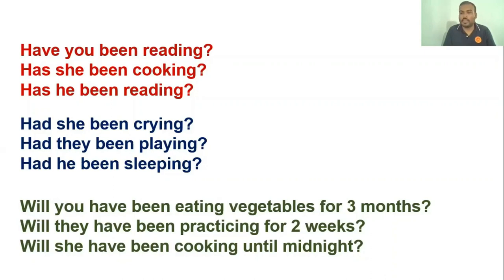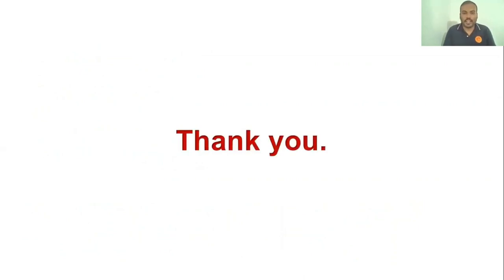To summarize: Present perfect continuous tense describes actions that have started earlier and have already stopped recently or are still continuing. Past perfect continuous tense describes actions that have started earlier and already stopped in the past. Future perfect continuous tense describes actions which are going to stop in the future. Thank you for joining with us — we wish you the best of luck. I think you gained a lot from this video.